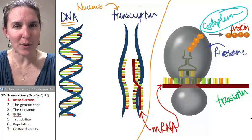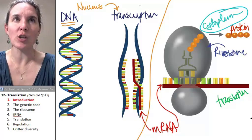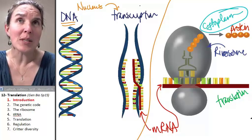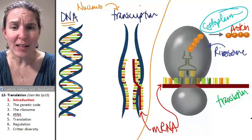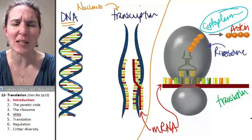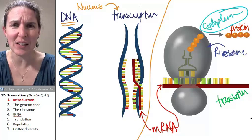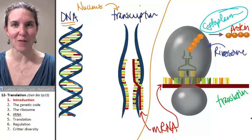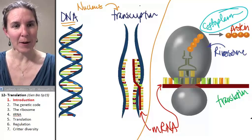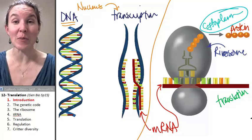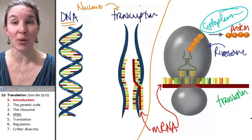Before we do this, hopefully you are wondering: how is it possible that the messenger RNA even contains information? How does DNA contain information at all? And it contains information in the genetic code.